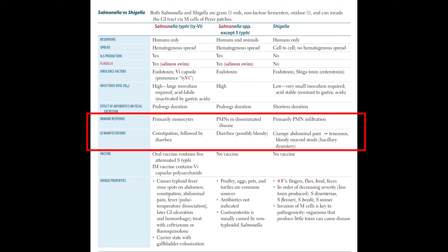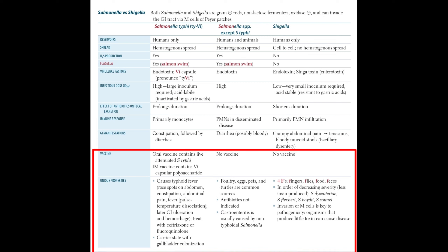Regarding GI manifestations: Salmonella typhi causes constipation followed by diarrhea. Non-typhoidal Salmonella species cause diarrhea, which is probably bloody. For Shigella, the GI manifestation includes crampy abdominal pain followed by tenesmus and bloody mucoid stool — we call this bacillary dysentery.